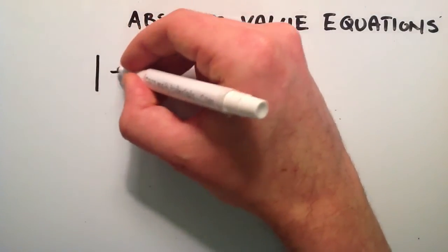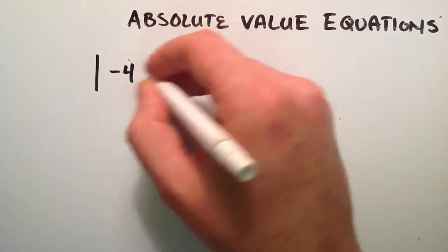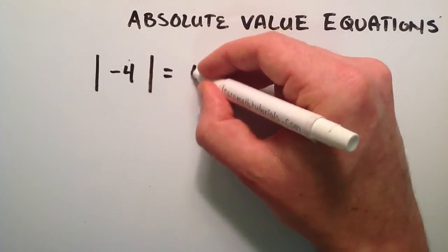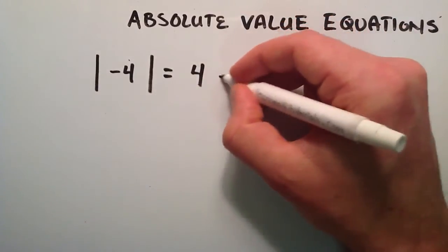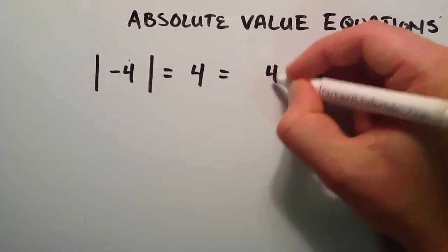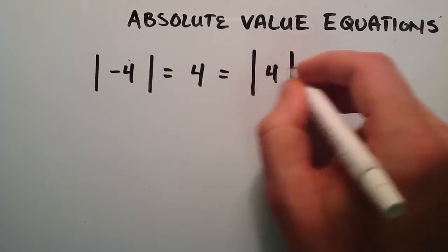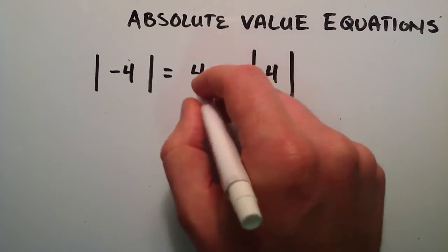For example, if I had a negative four inside of my absolute value bars, then that's basically equal to a positive four. And we can also put a positive four inside of absolute value bars, and the positive four inside the absolute value also equals a positive four.